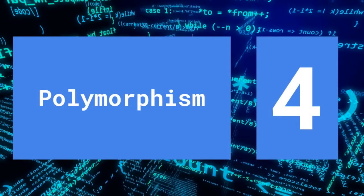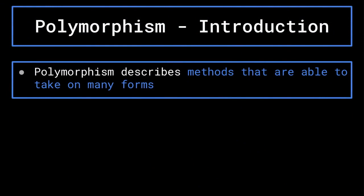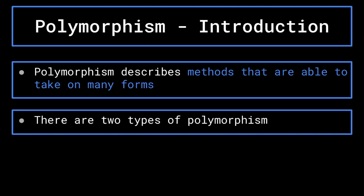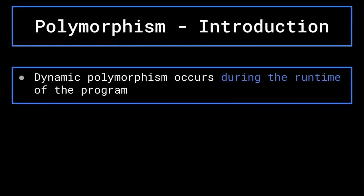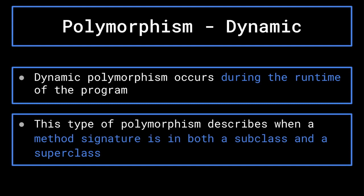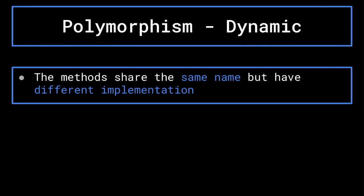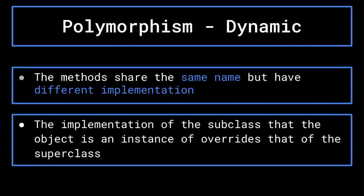In this final section, we will be covering the last of the four main principles: polymorphism. Polymorphism describes methods that are able to take on many forms. There are two types of polymorphism. The first is what is called dynamic polymorphism. Dynamic polymorphism occurs during runtime, when the program is being executed. This describes when a method signature is present in both a subclass and a superclass. The methods share the same parameters but have separate implementations. In this case, the subclass's implementation of the method overrides the superclass's.